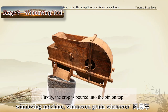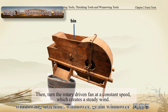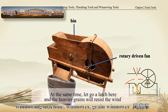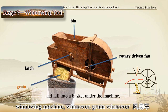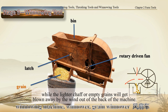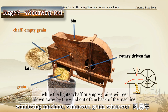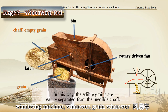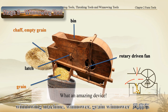Firstly, the crop is pulled into the bin on top. Then, turn the rotary-driven fan at a constant speed, which creates a steady wind. At the same time, let go a latch here, and the heavier grains will resist the wind and fall into a basket under the machine, while the lighter chaff or empty grains will get blown away by the wind out of the back of the machine. In this way, the edible grains are easily separated from the inedible chaff. What an amazing device!